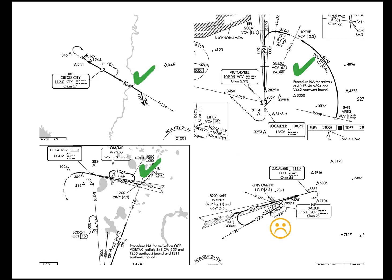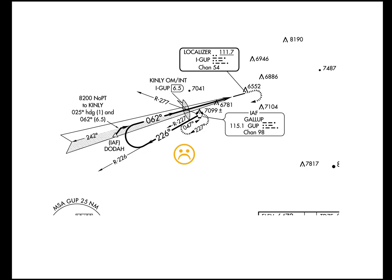When you look at these, there's a good body of knowledge in the Instrument Flying Handbook, the Instrument Procedures Handbook, as well as the AIM on how to do a procedure turn, a hold-in-lieu of a procedure turn, and a DME arc. But there's very little, if anything, on how you're supposed to do a teardrop course reversal.